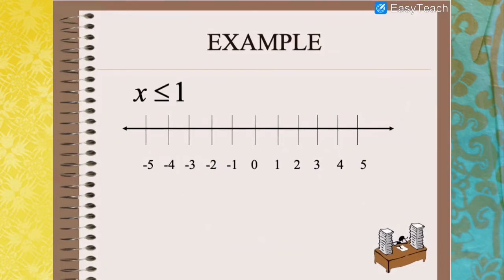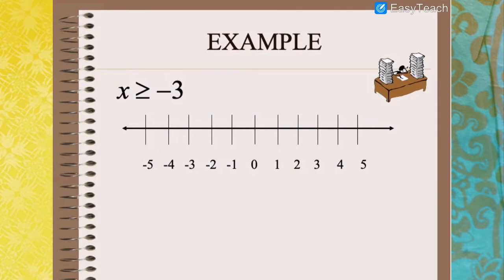Another example: on the number line, you can draw x less than or equal to 1. Locate 1 on your number line and draw a solid dot or solid circle. Since it is less than, draw a line towards the left side. Another example: x greater than or equal to negative 3 — locate negative 3 on your number line with a solid circle, and draw a line towards the right side for all real numbers greater than or equal to negative 3.